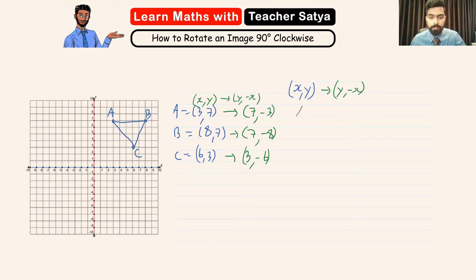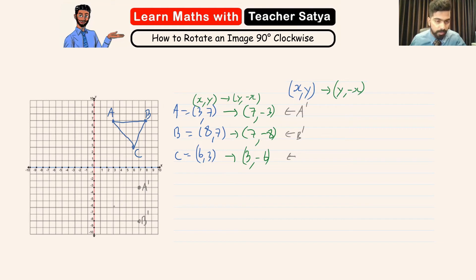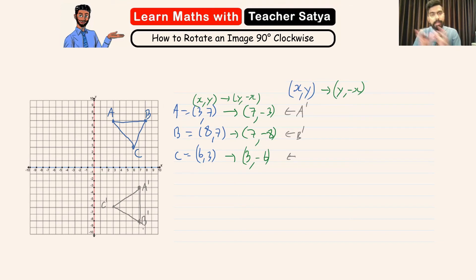Now let's go ahead and plot it. A prime will be at (7, -3), right here. B prime will be at (7, -8), right about here. And C prime will be at (3, -6), right about here. This is what our image looks like when we do a 90 degree clockwise rotation about the origin. Keep in mind our (x, y) changes to (y, -x).